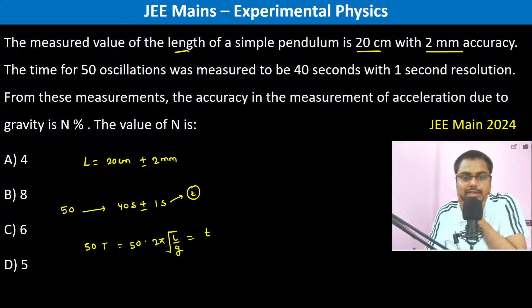So we have this is t. This t is given for 50 oscillations.